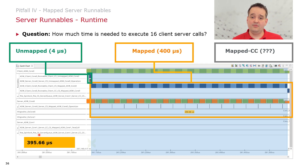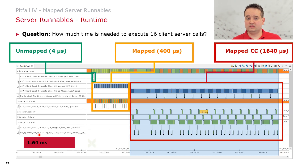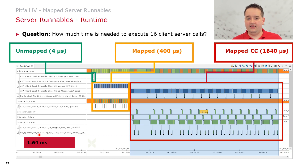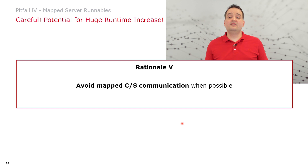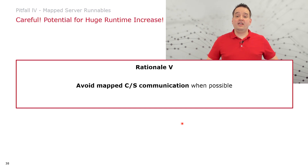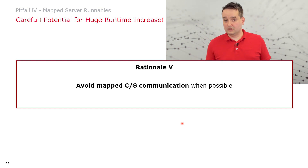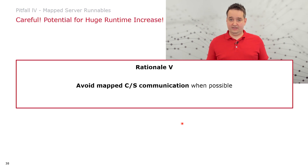If we additionally map the server to a cross-core, the runtime further increases to 1.64 milliseconds — nearly a factor of 400. Runtime is consumed by x-signals for cross-core communication and spinlocks held to protect data elements when written to. What we learn from this as rationale 5: if possible, avoid client-server communication, change your software design, use sender-receiver instead, or try to find another way.